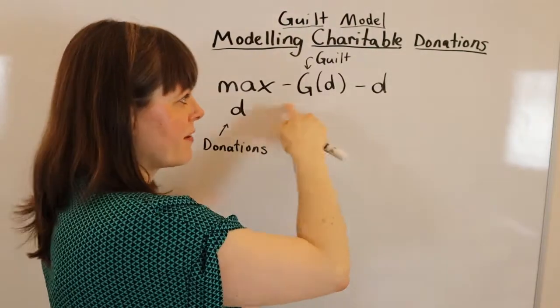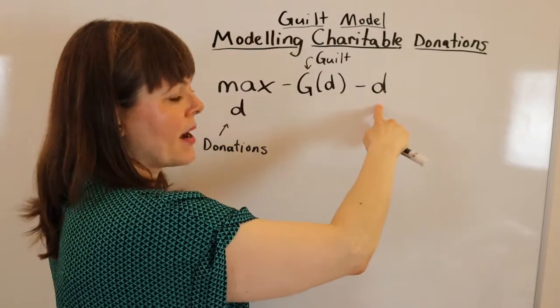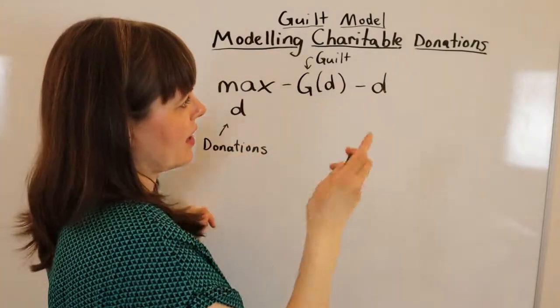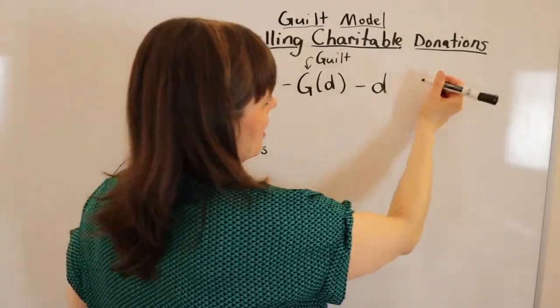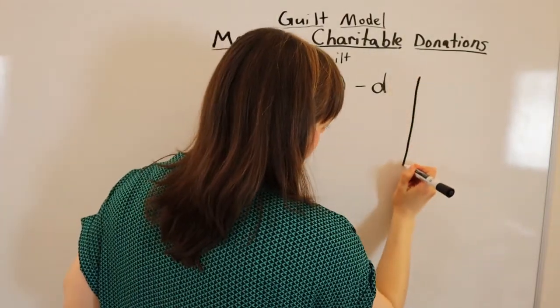So we have a person gives in order to reduce their guilt. That's the benefit of giving is that you get to reduce your guilt minus D, but you lose the money. So if we're going to model this, we need to draw a picture of our guilt function.